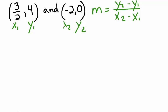So let's go ahead and plug these values into our formula. m equals y2, which is 0, minus y1, which is 4, so 0 minus 4, divided by x2, which is negative 2, minus x1, which is 3 halves.